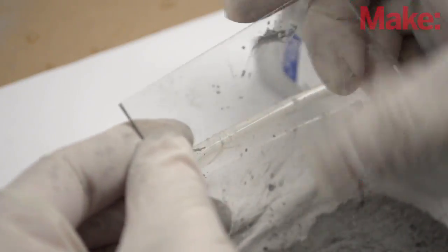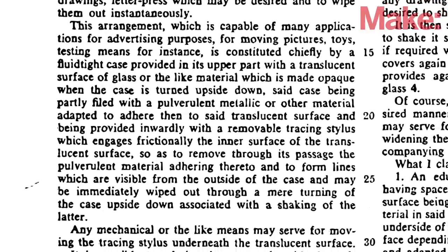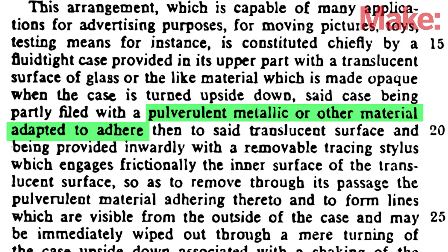After playing around with aluminum powder I bought from a chemistry supply house, I realized it doesn't stick to glass very well. Looking back to the patent, it merely says the pulverulent material is adapted to adhere to the glass. It doesn't say how.